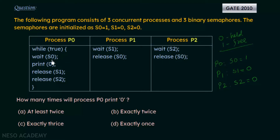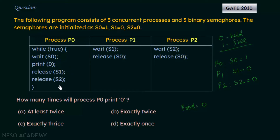When P0 executes the wait S0 operation, it checks S0's value, which is 1 — meaning it is free. So P0 enters the code, the value of S0 is set to 0 (now being held), and it prints 0 for the first time. So our print count is now 1.